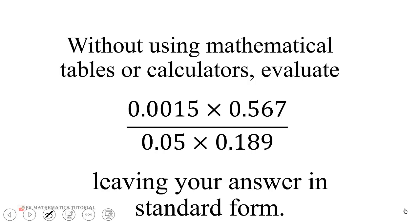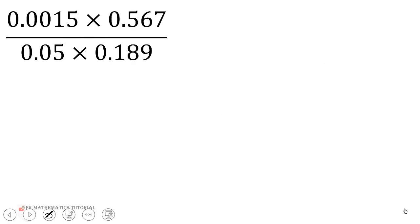Without using mathematical tables or calculators, evaluate 0.0015 times 0.567 over 0.05 times 0.189, leaving your answer in standard form. So we are going to start. The question says we should evaluate this without using calculators, so don't use calculators.